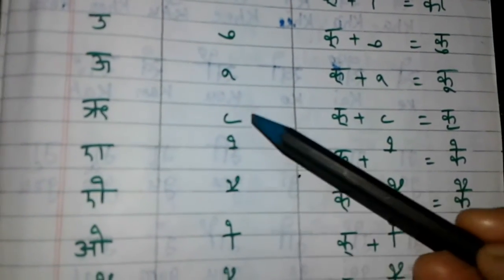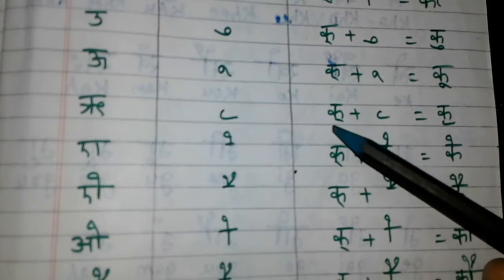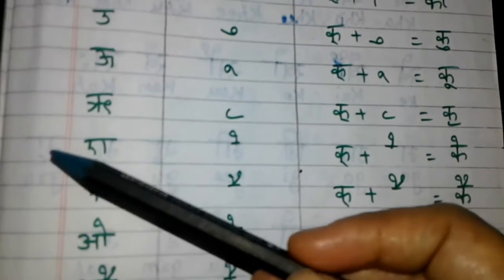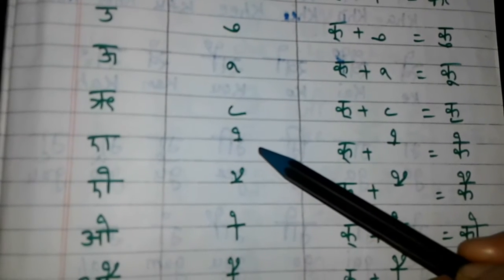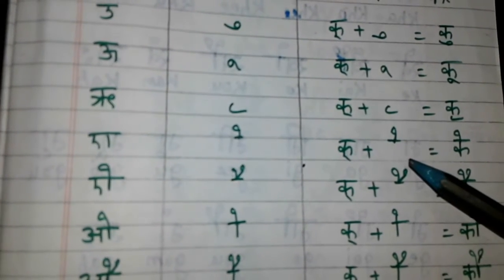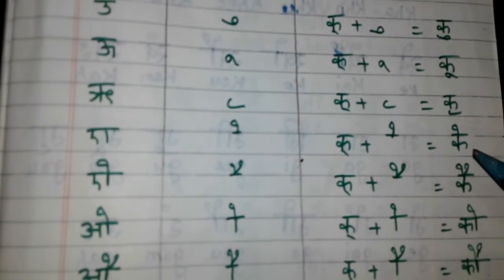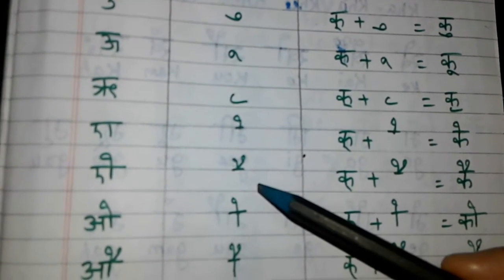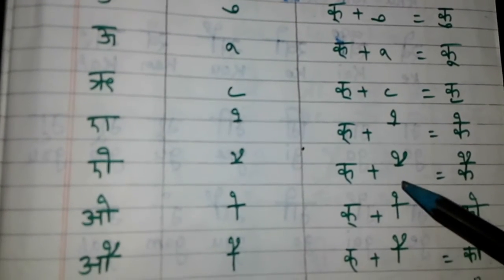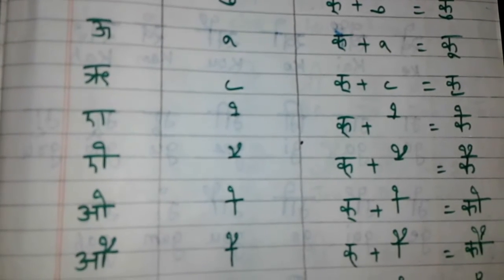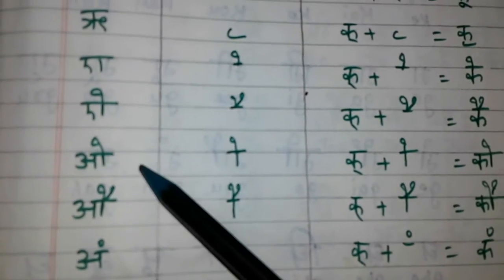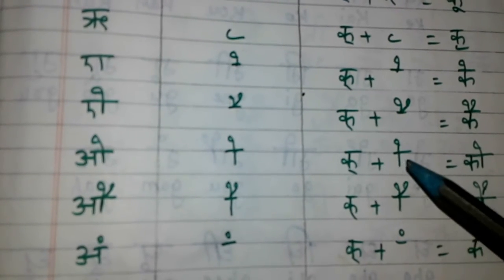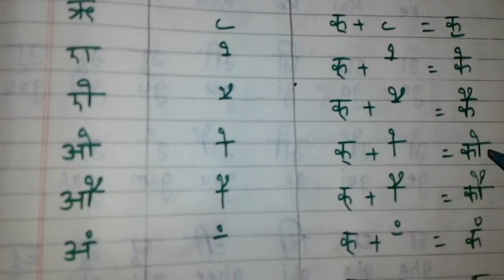Next, 'ru' matra: k plus ru matra = kru. Then 'ee' matra: k plus ee matra = kee. And 'o' matra: k plus o matra = ko.